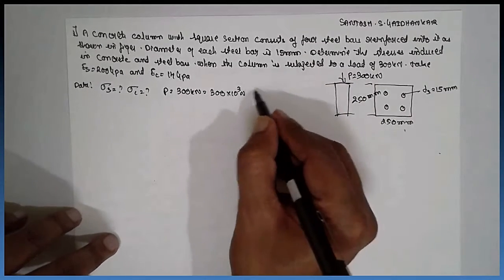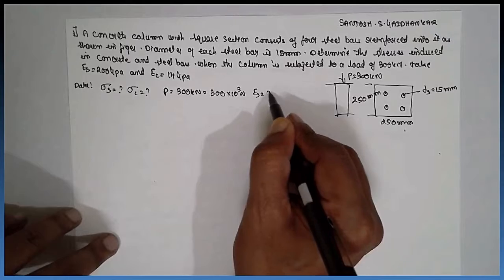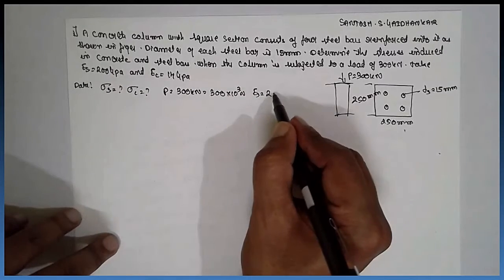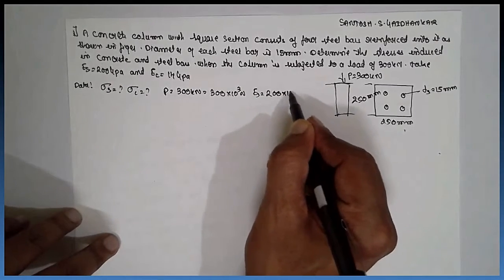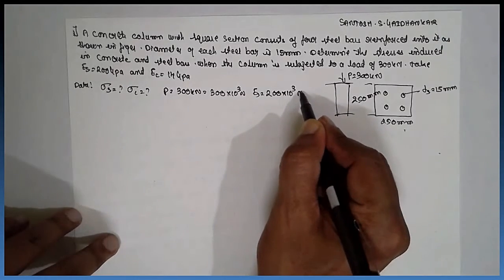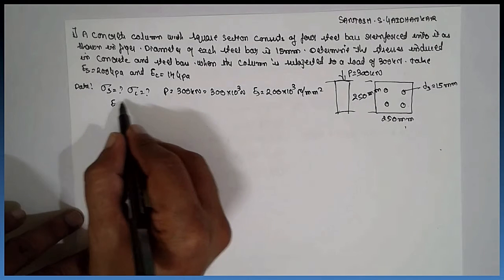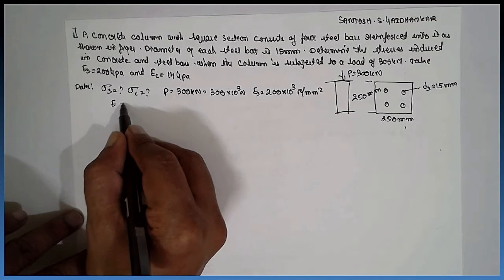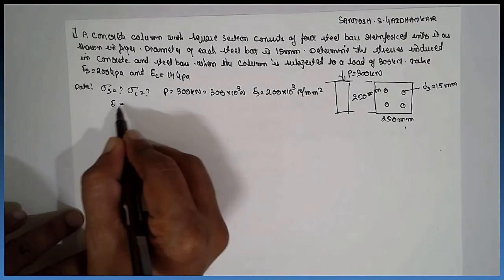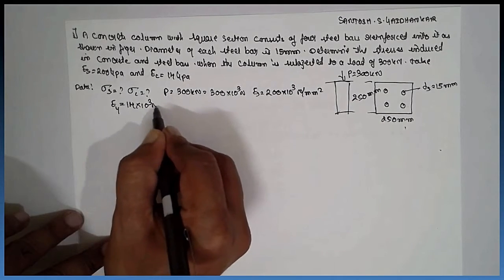Now, take the Young's modulus for the steel as 200 GPa. Convert into N per mm square: 200 times 10 to the power 3. That's 14 times 10 to the power 3 N per mm square.